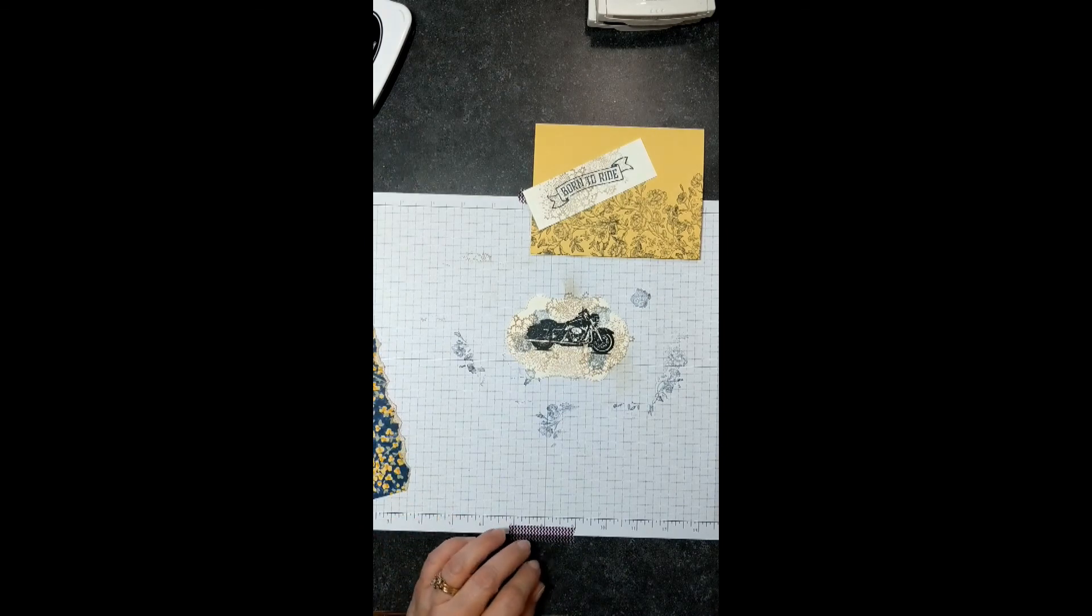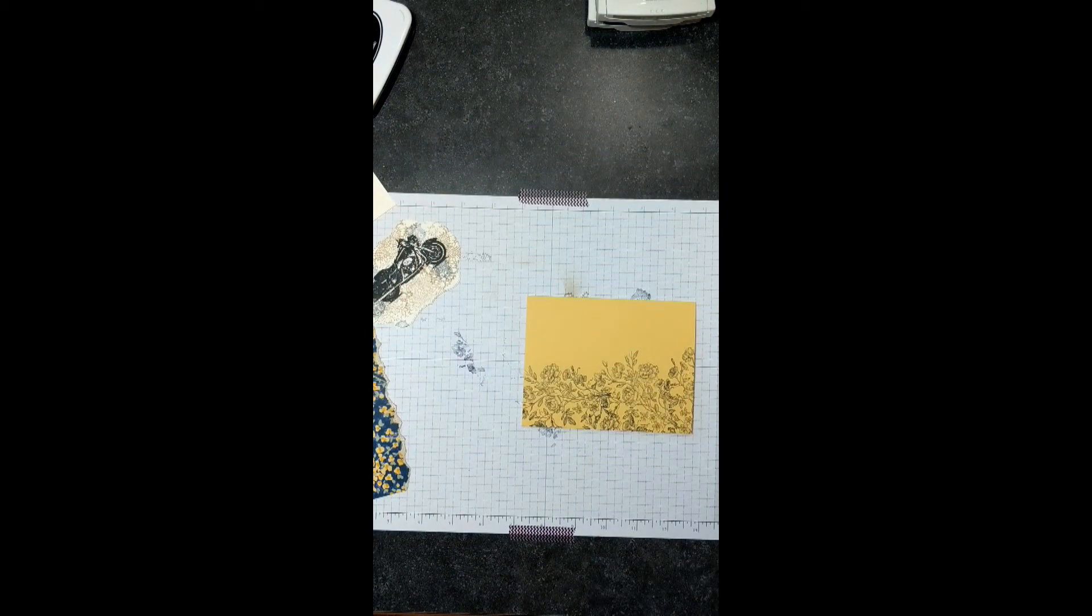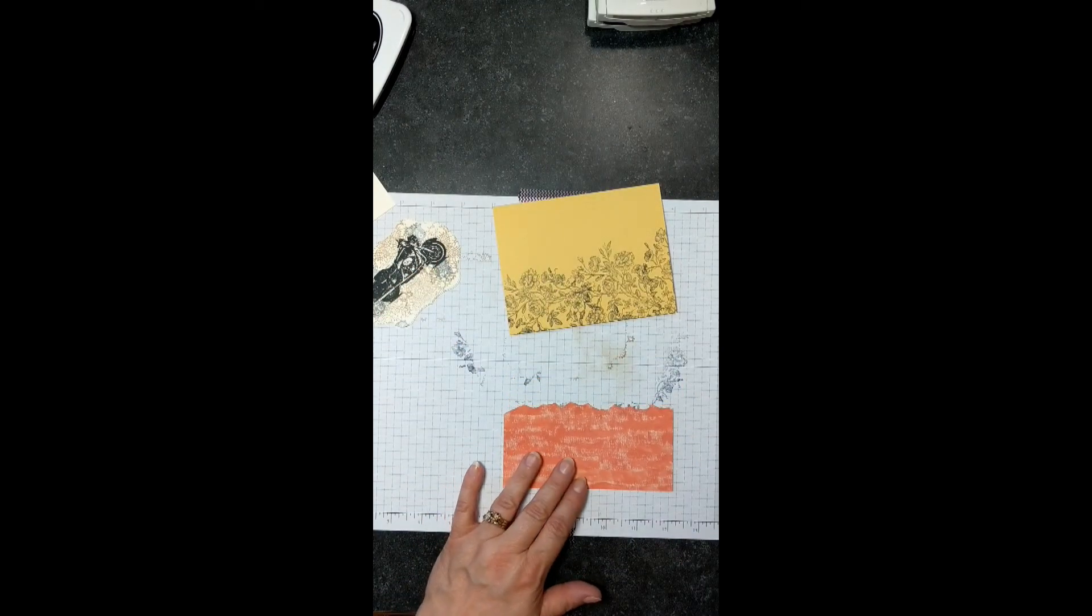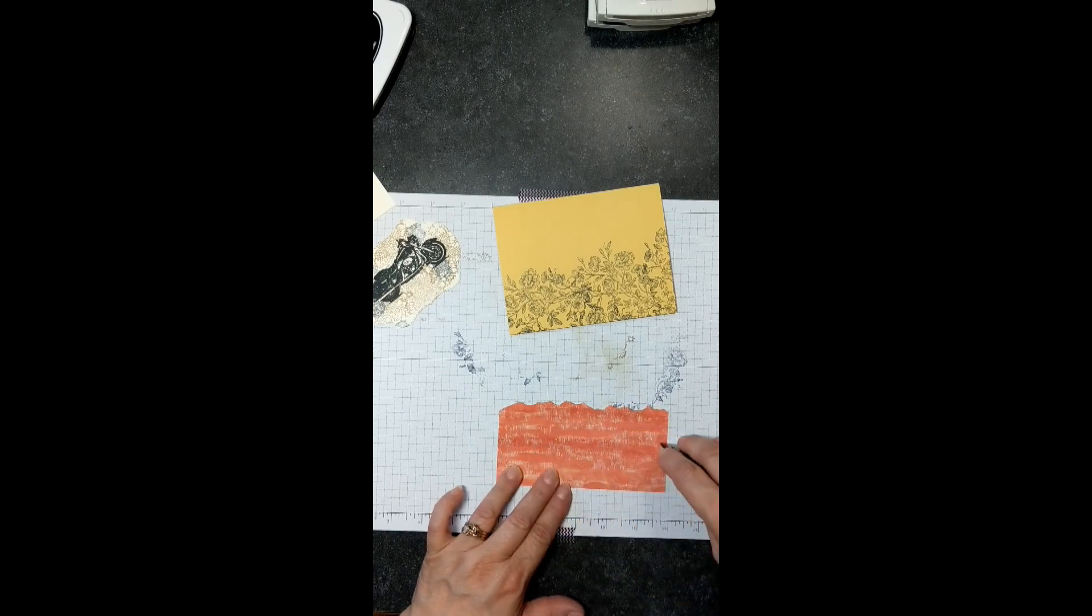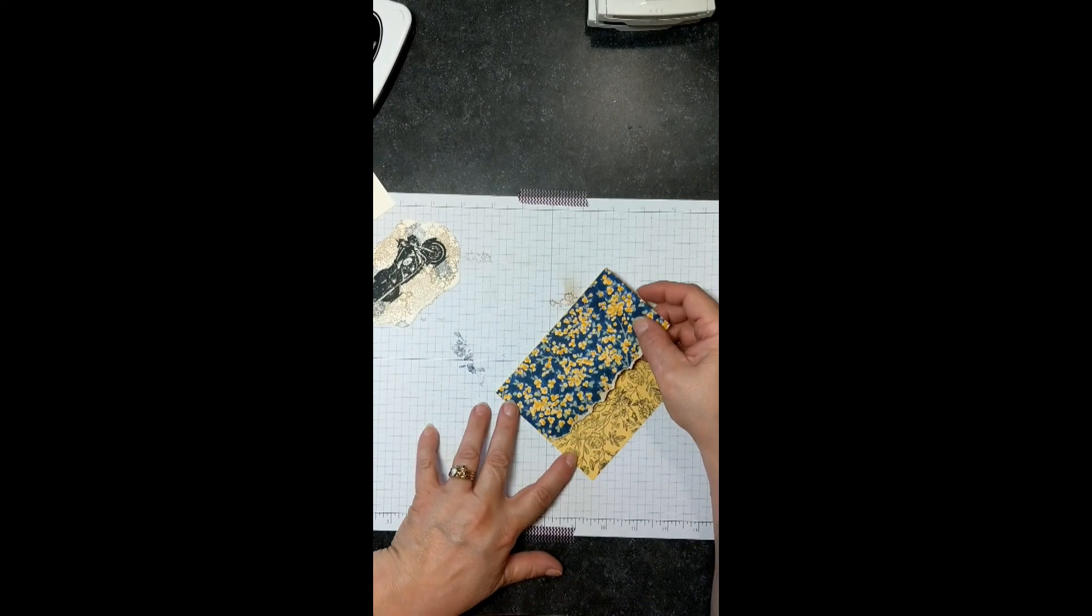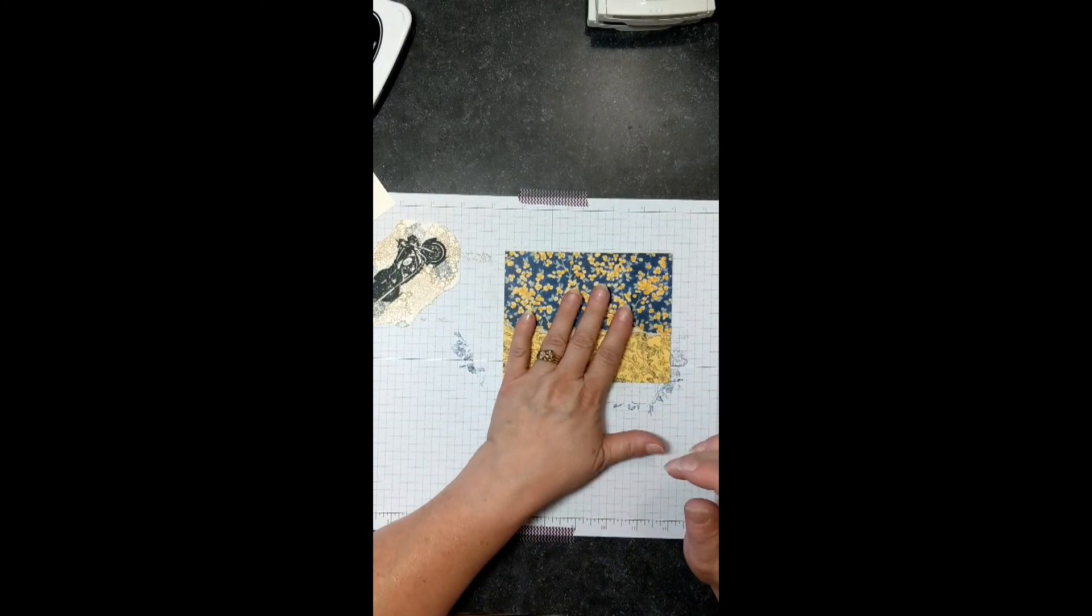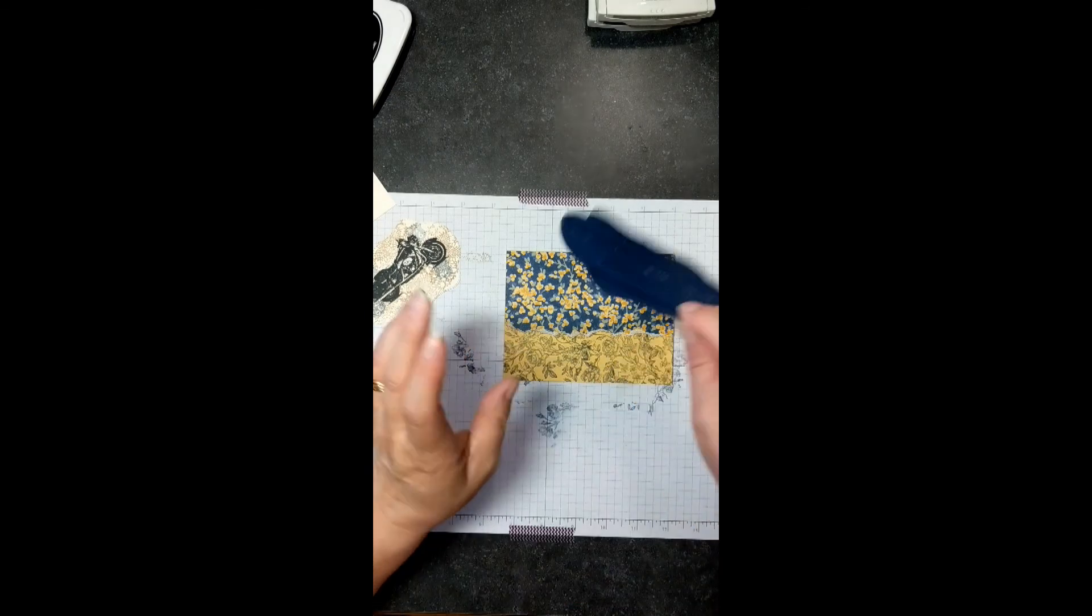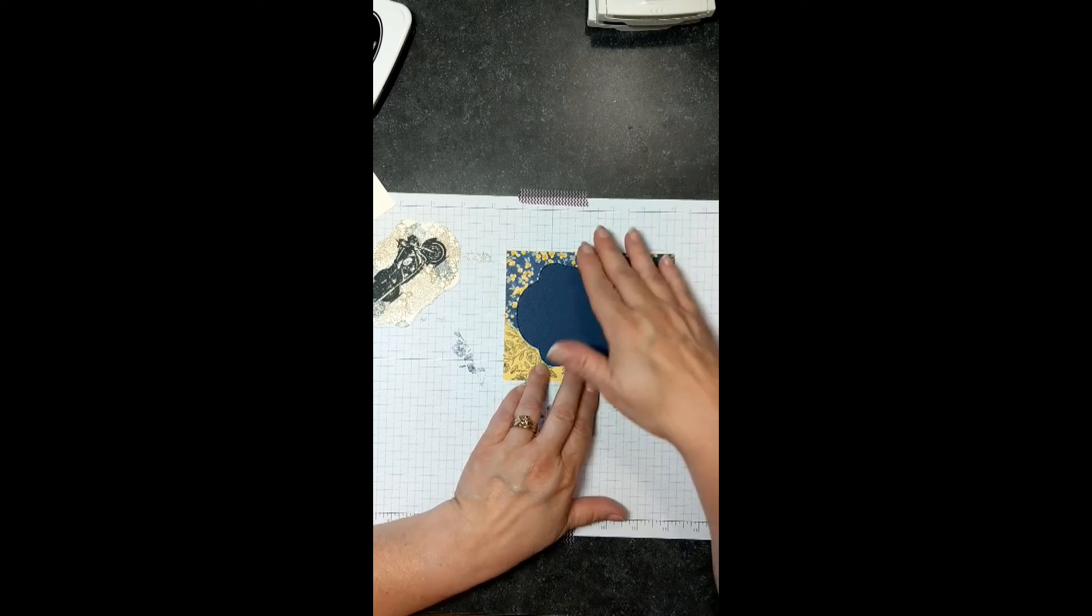The first thing I want to do is lay this down. We're just going to line this up straight across. I'm going to just use Snail to adhere this to my card. I like to be generous with my Snail because this will be mailed and I want it to stay together. Where I live, the fluctuation in temperature can actually make funny things happen with your adhesives. So we have that down. Some more Snail for our frame.